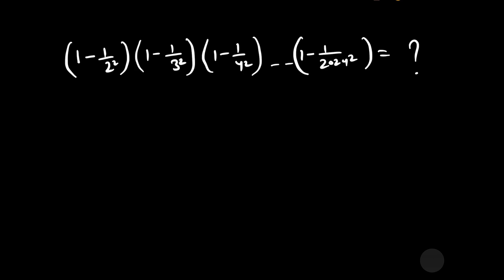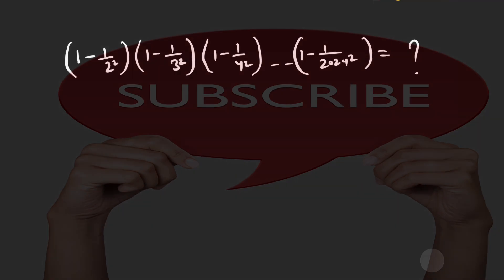You are most welcome to our YouTube channel Saval Bawal. Our question is: 1 minus 1 by 2 squared, multiplied by 1 minus 1 by 3 squared, multiplied by 1 minus 1 by 4 squared, and so on, up to 1 minus 1 by 2024 squared. We have to calculate the value of this multiplication series.